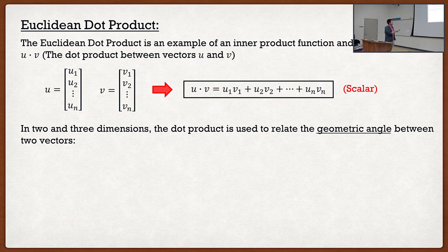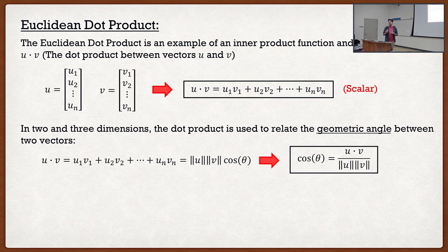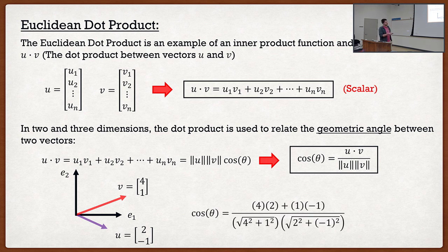u dot v equals the sum of components multiplied together, which is also equal to the magnitude of the first vector times the magnitude of the second vector times cosine of theta. This is important because we can now solve for the angle between two vectors. For example, with vector v of 4,1 and u of 2, negative 1, substituting into the formula gives an angle of 40.6 degrees between them.